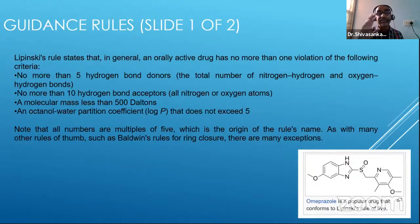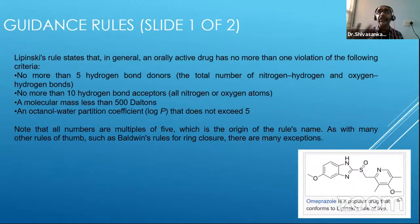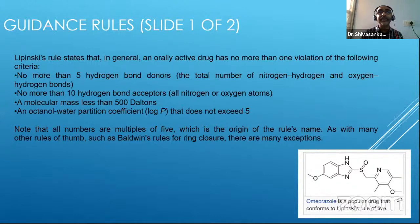Since these are all multiples of five, it is called Lipinski's Rule of Five. But these are not the rule of thumb. If you look up the structure of ranitidine, ranitidine would be the best example which would violate this rule. And most of us during a course of antibiotics would have taken ranitidine.